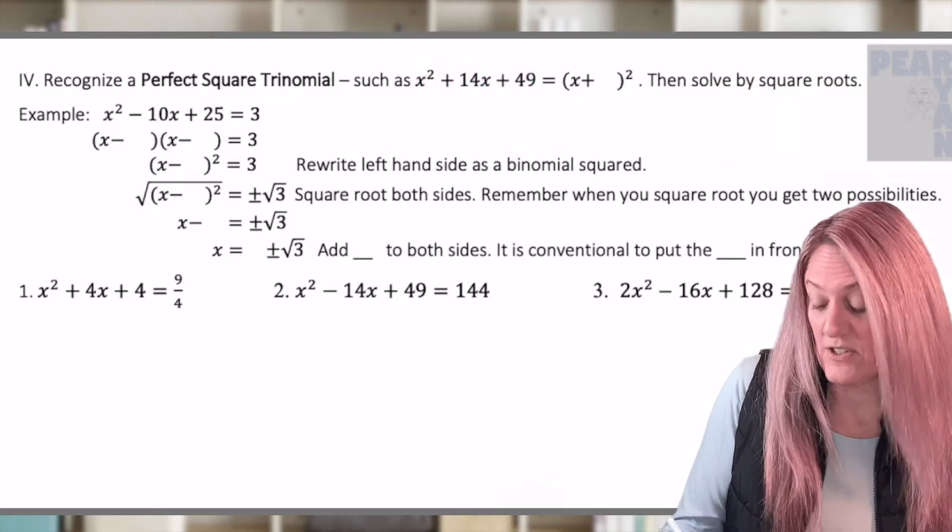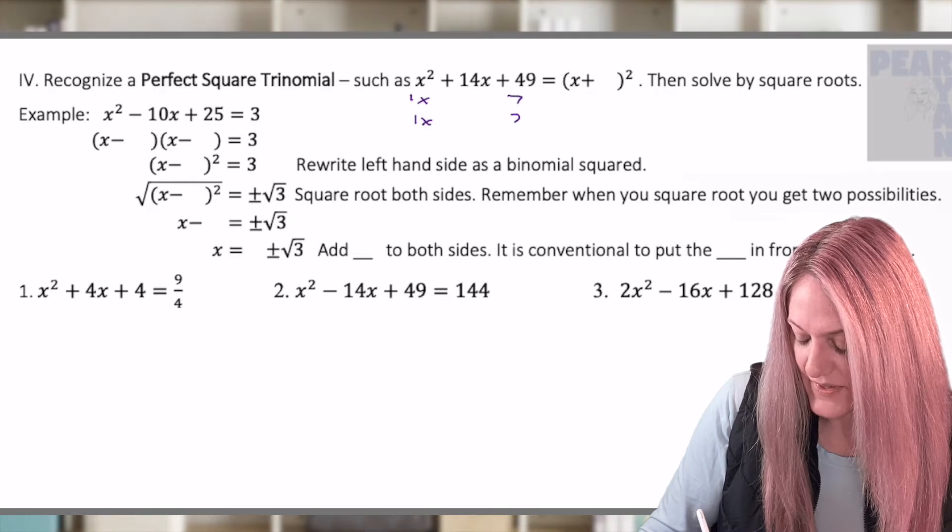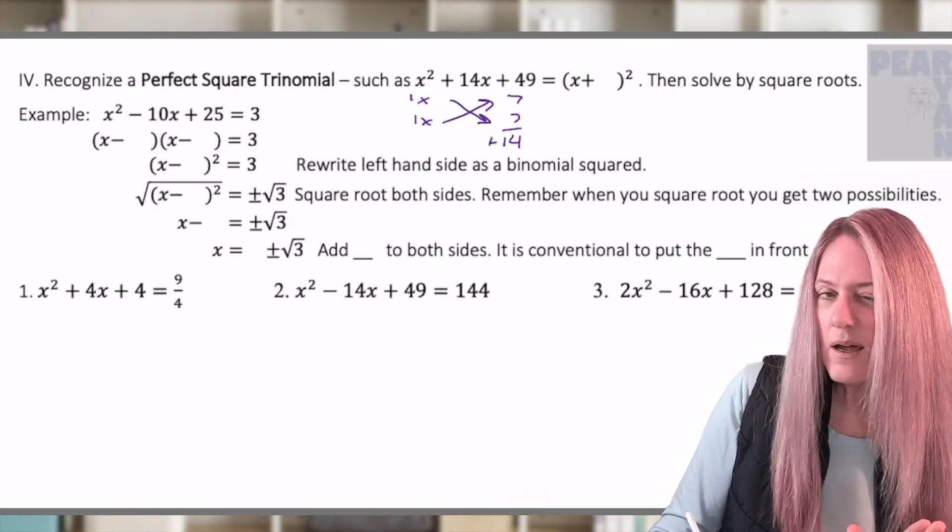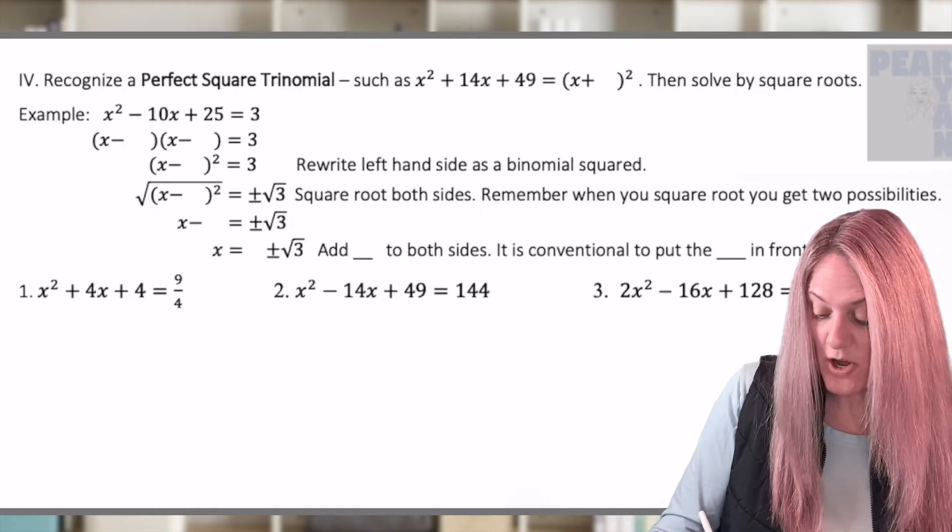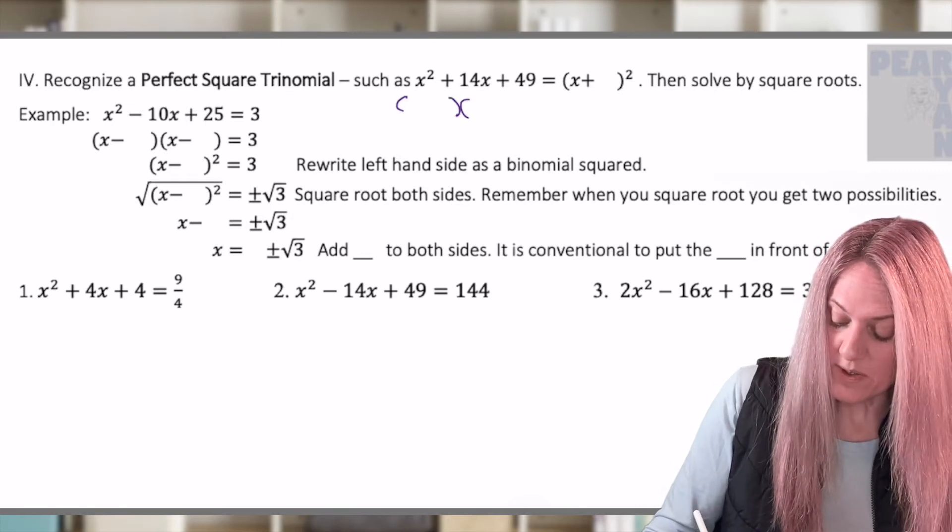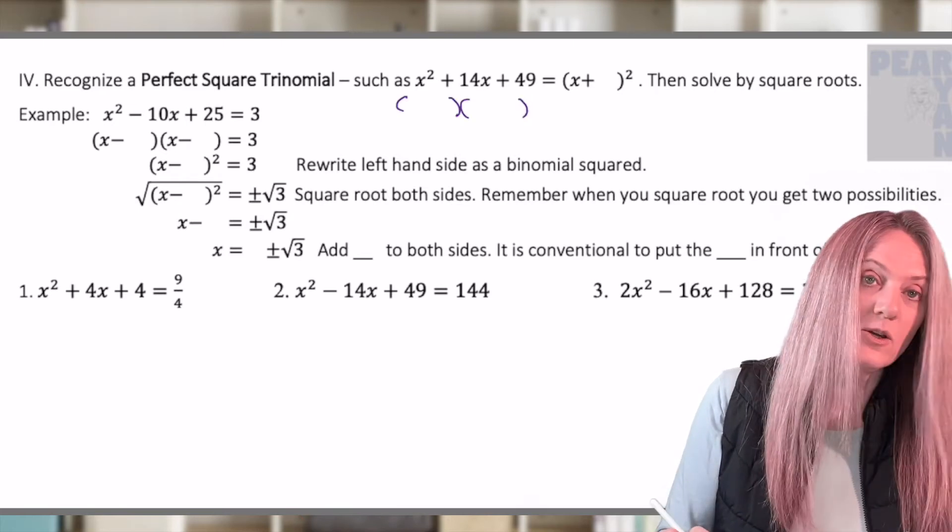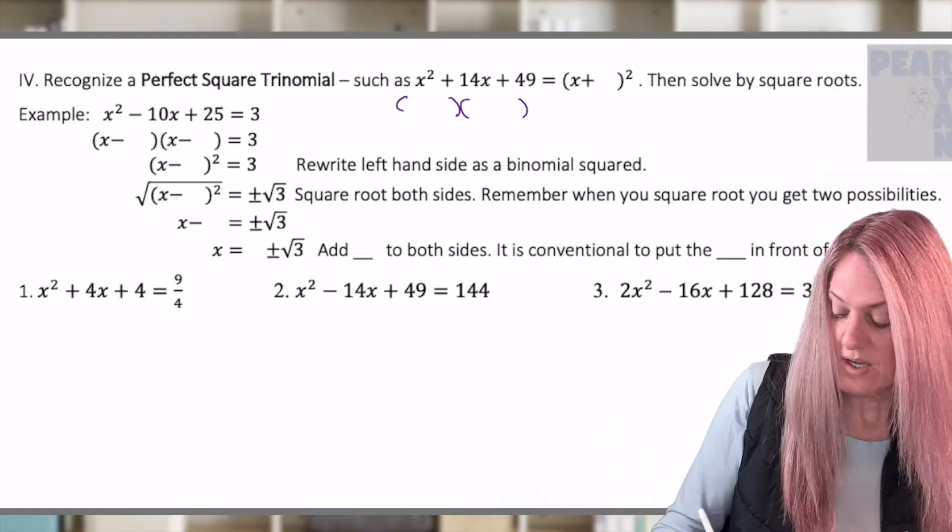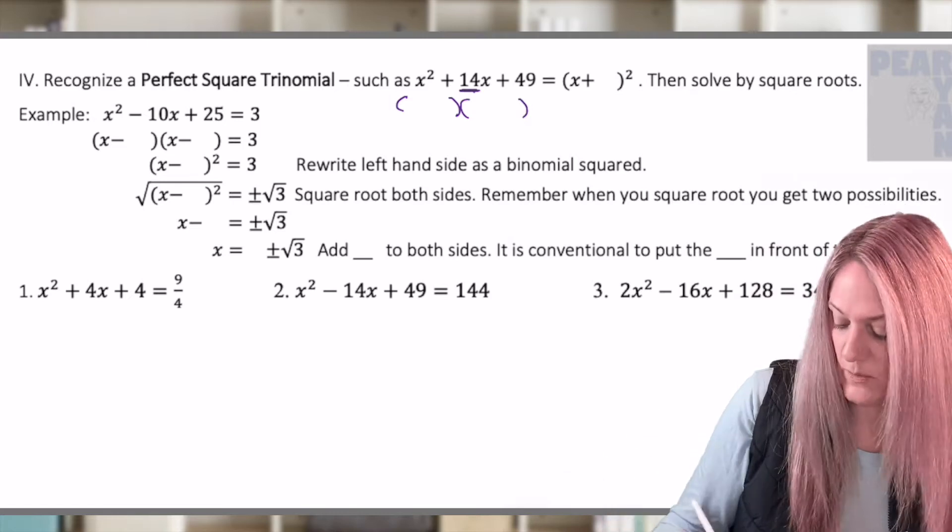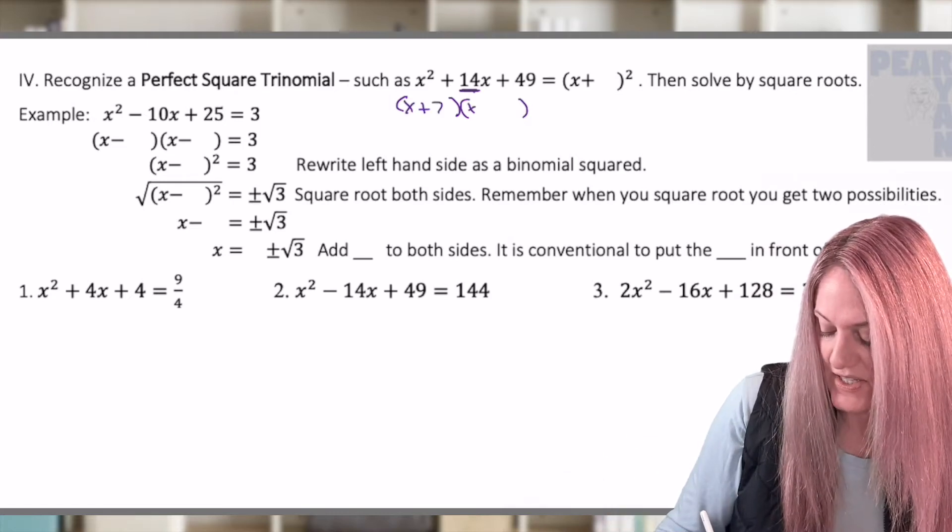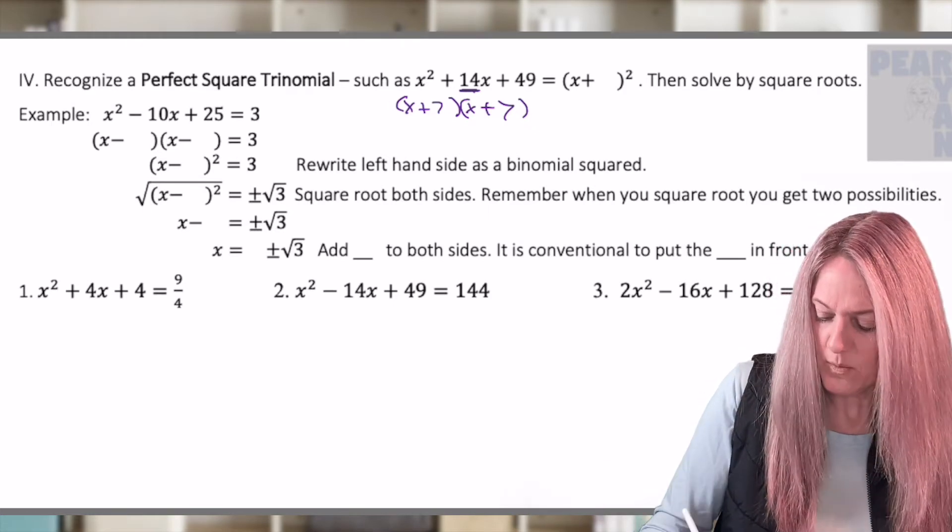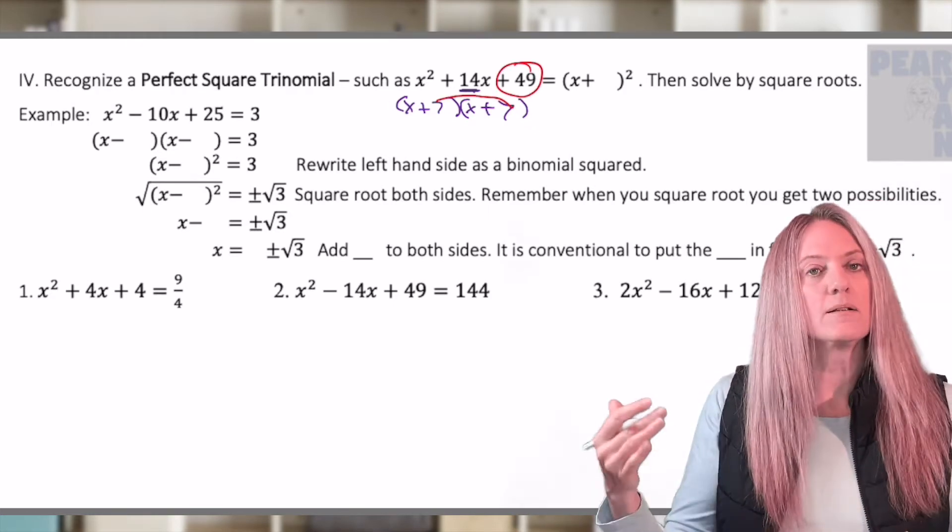Think about factoring this. So one x, one x, seven, seven, and it gives us 14 in the middle. But look, I kind of already recognize that. So let's talk about what we could have done instead. I know it's going to be a binomial times a binomial and they're going to match. So I need a number plus itself to add to 14. Well, we know, of course, that is seven and seven. And then where is this 49 coming from? Well, of course, seven times seven is 49.